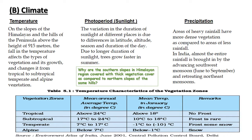Similarly, sunlight also changes the types of vegetation. The variation in the duration of sunlight at different places is due to differences in latitude, altitude, season, and duration of the day. Due to longer duration of sunlight, trees grow faster in summer. Next is precipitation — areas of heavy rainfall have more dense vegetation as compared to areas of less rainfall.